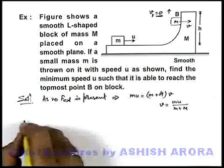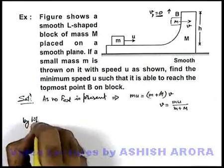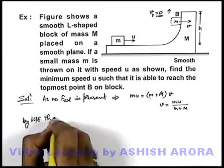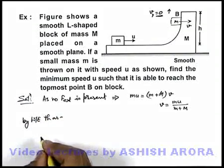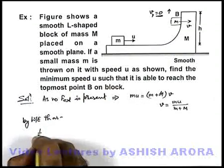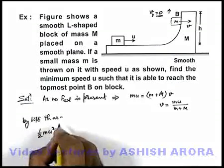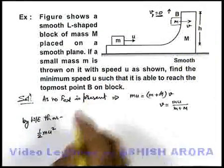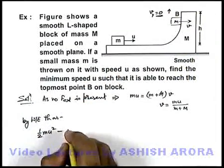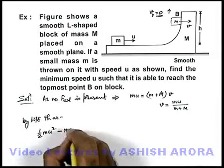So here we can evaluate u by work energy theorem. We'll be having initial kinetic energy is half m u square. As it is raised to a height h, we can write the work done by gravity will be minus m g h.